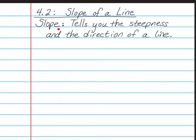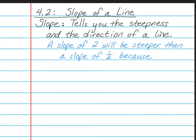The slope is very important. It tells you the steepness of the line and also the direction of the line. A slope of 2 is going to be steeper than a slope of 1 half because 2 is greater than 1 half. So that is what I mean by the steepness of the line.